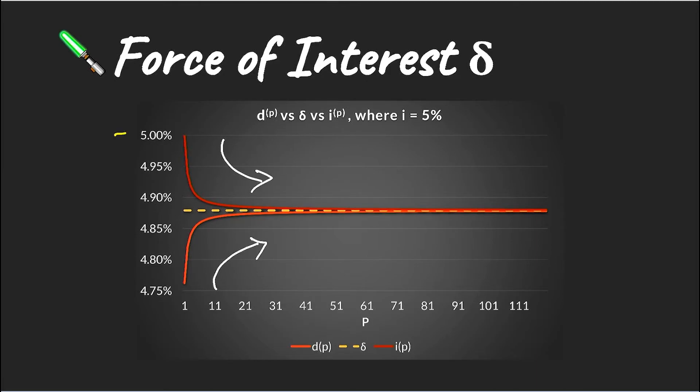By showing a chart of both our i^(P) and our d^(P), we can see how they both converge to the force of interest. So this is telling us that as we split up our time period into ever increasing smaller periods, that our interest rate converges to what is known as our force of interest.